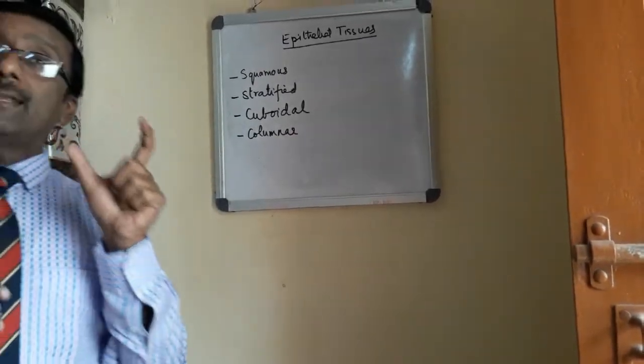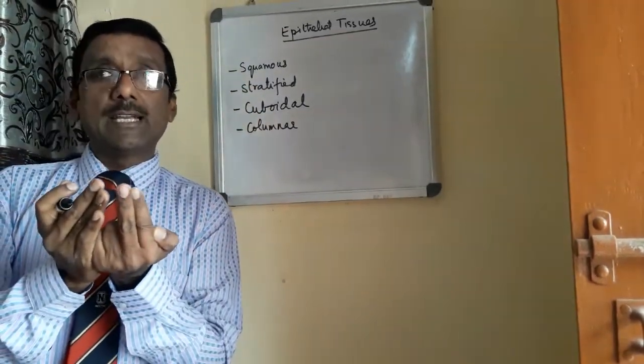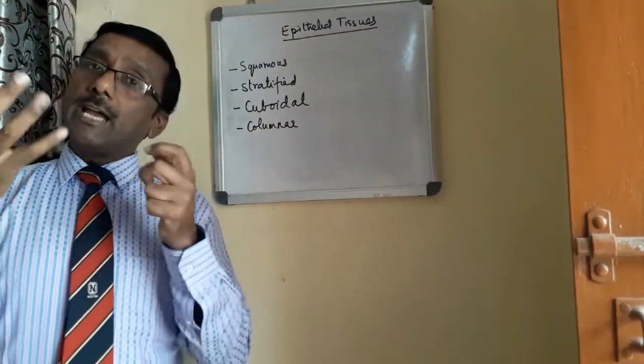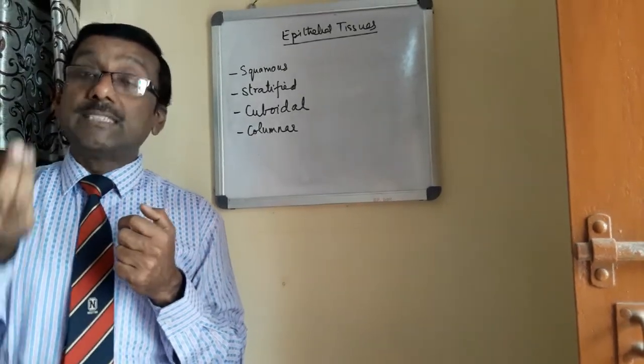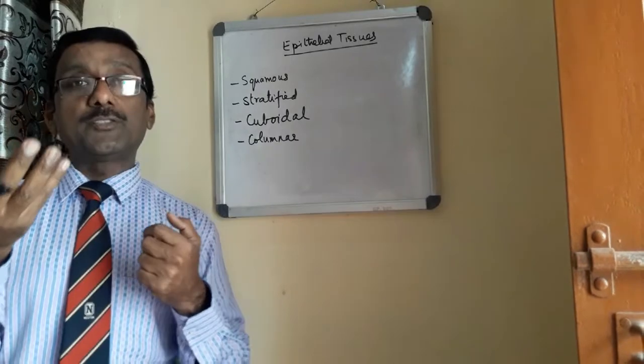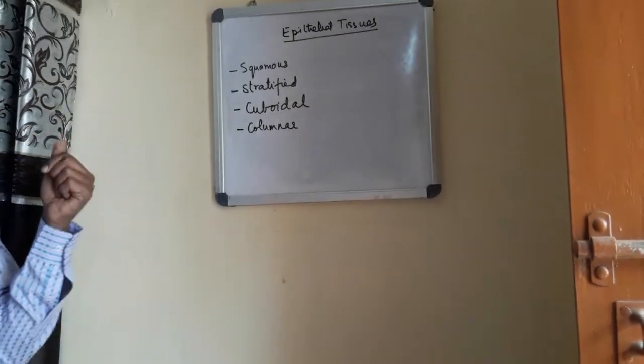It is available in stomach and intestine, in the inside lining. The main function is absorption of nutrients in the large intestine and small intestine, and secretion of gastric juices into the stomach.